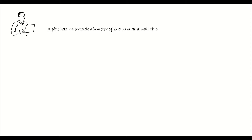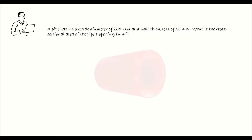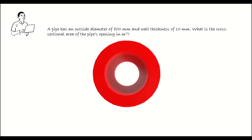A pipe has an outside diameter of 800 mm and a wall thickness of 10 mm. What is the cross-sectional area of the pipe's opening in meters squared? In order to figure out the cross-sectional area of the pipe's opening, we need to use the dimensions given for both the outside diameter and the wall thickness. The outside diameter is 800 mm and the wall thickness is 10 mm.